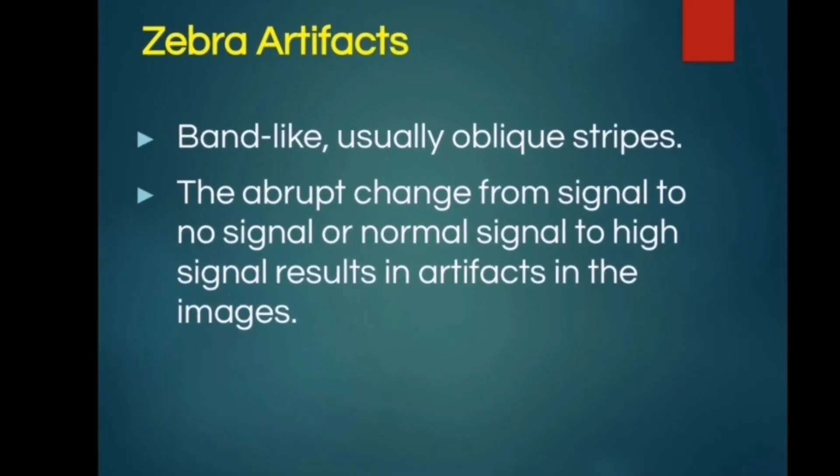A zebra artifact is a band-like, usually oblique striped artifact. The abrupt change from signal to no signal, or from normal signal to a higher signal, results in this artifact in the images.